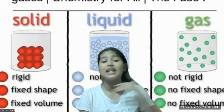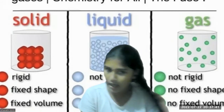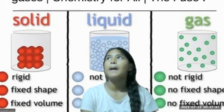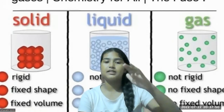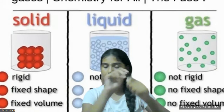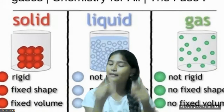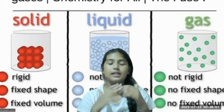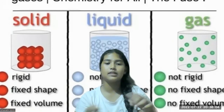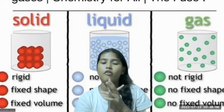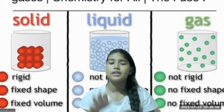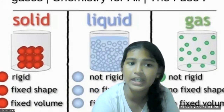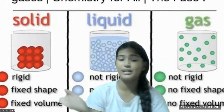When it comes to mass, gas does have a definite mass. For example, a balloon filled with gas has a certain mass, and if you could carefully transfer that same amount of gas to another container, it would measure the same mass. So gas has a definite mass, which remains the same.